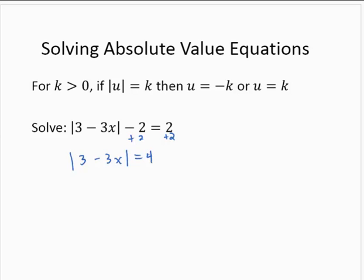Now I can use that idea from the general statement. Since this is now of the form absolute value of u equals a number, I can split this up into two equations: 3 minus 3x is equal to negative 4, or 3 minus 3x is equal to positive 4.